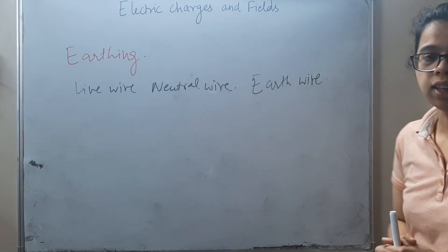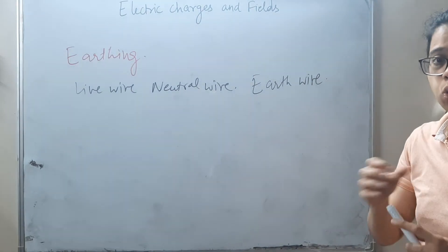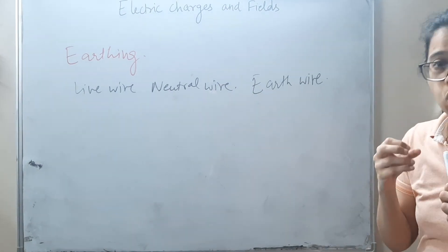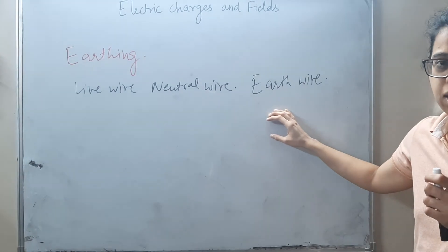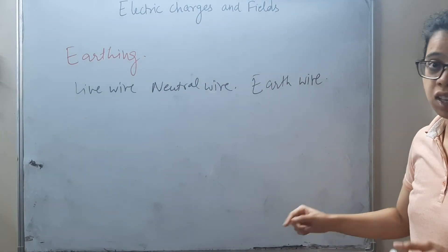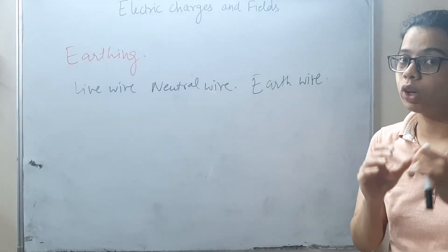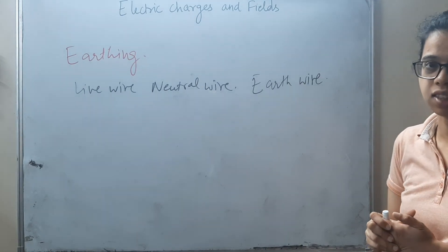The earth wire, if there is any short circuit or any fault in our electrical appliance, whatever excess charge is in our electrical appliance, it will go through the earth wire to the ground. What will happen? Our human body will not be harmed. So that is why we do earthing of our electrical appliances.